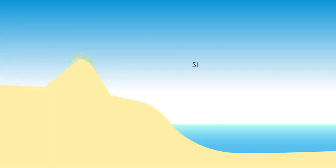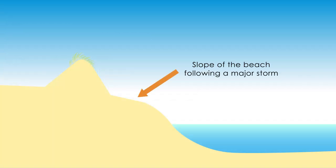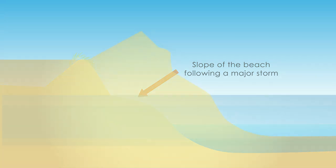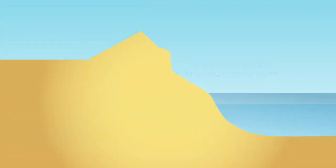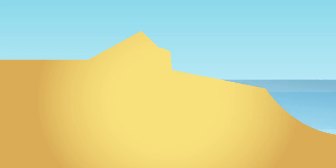A key control on shoreline migration in the RDA model is the slope of the beach following a major storm. Very steep beaches will experience minimal migration, whereas very shallow beaches will likely be overrun by the sea eventually.